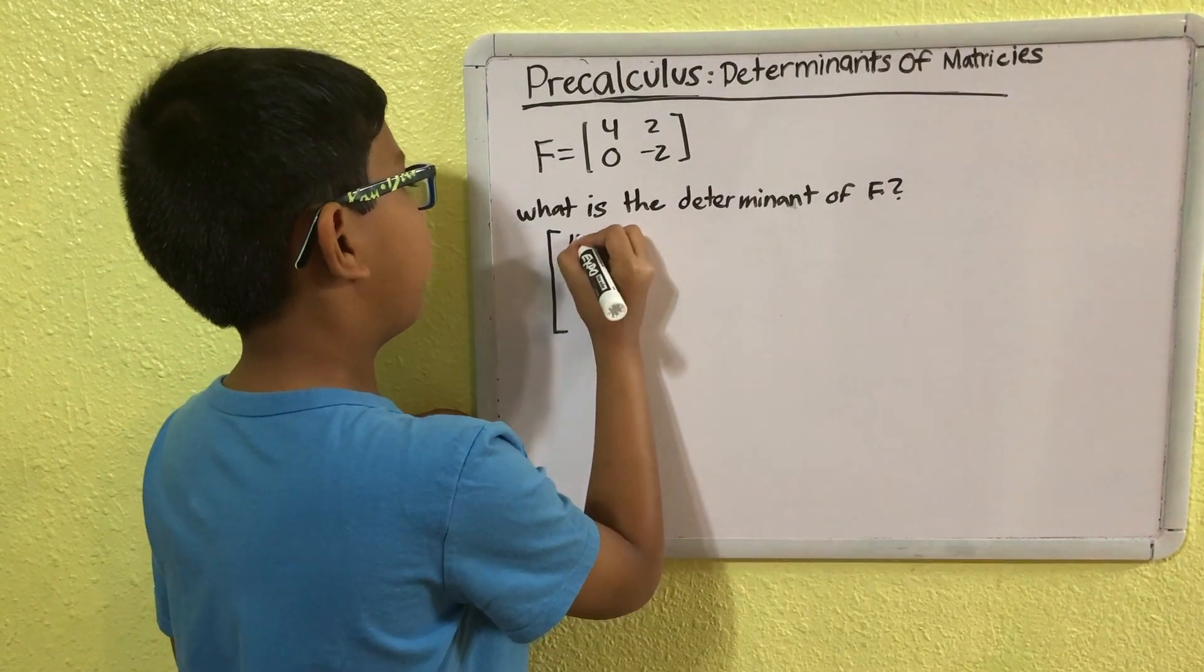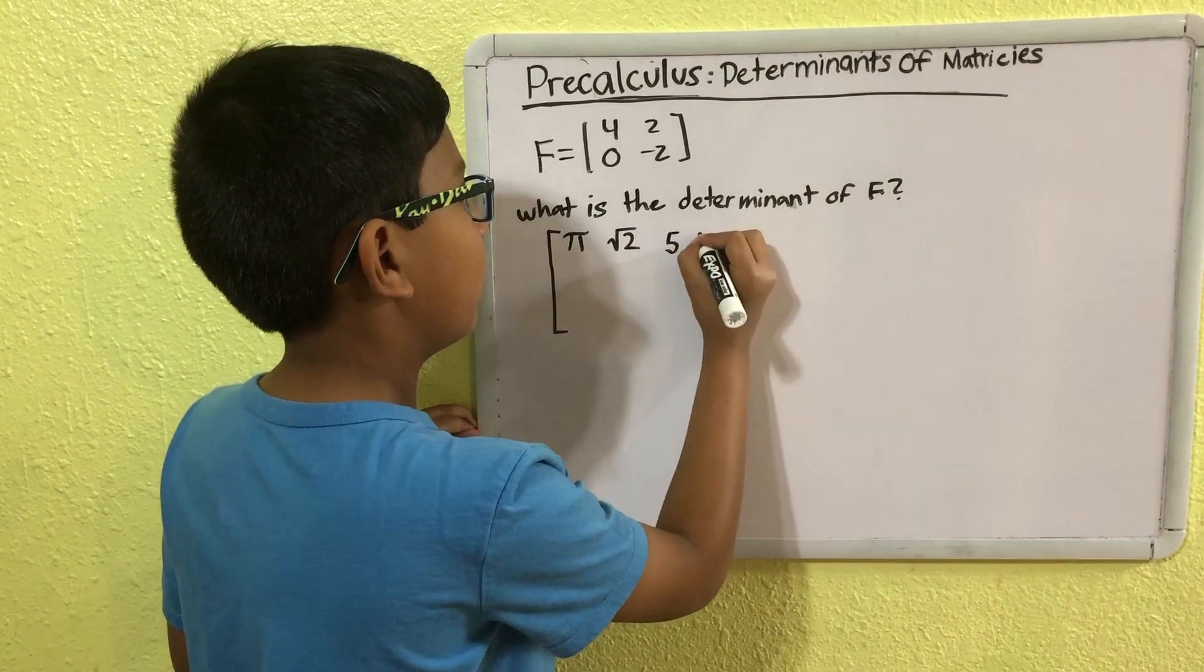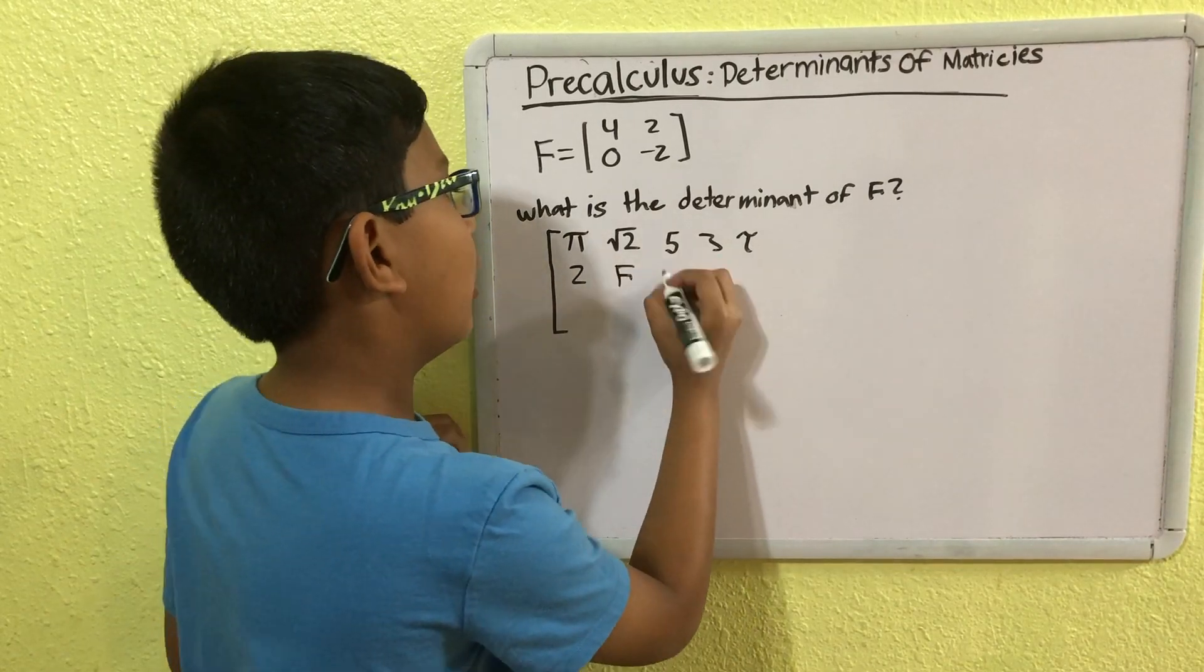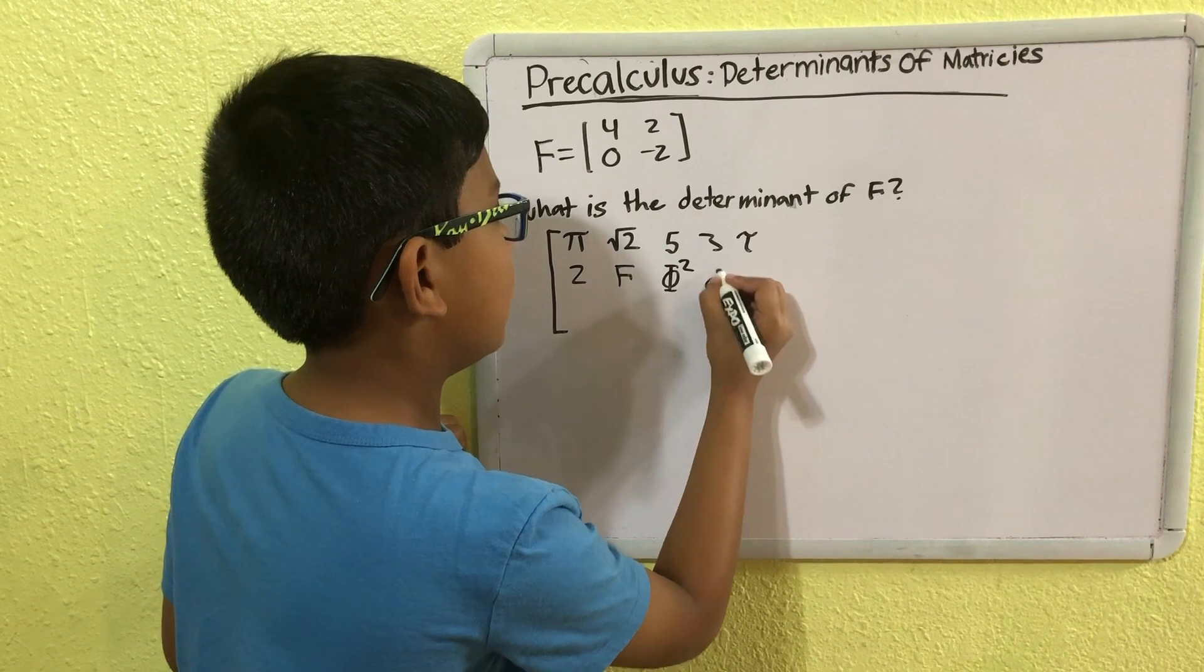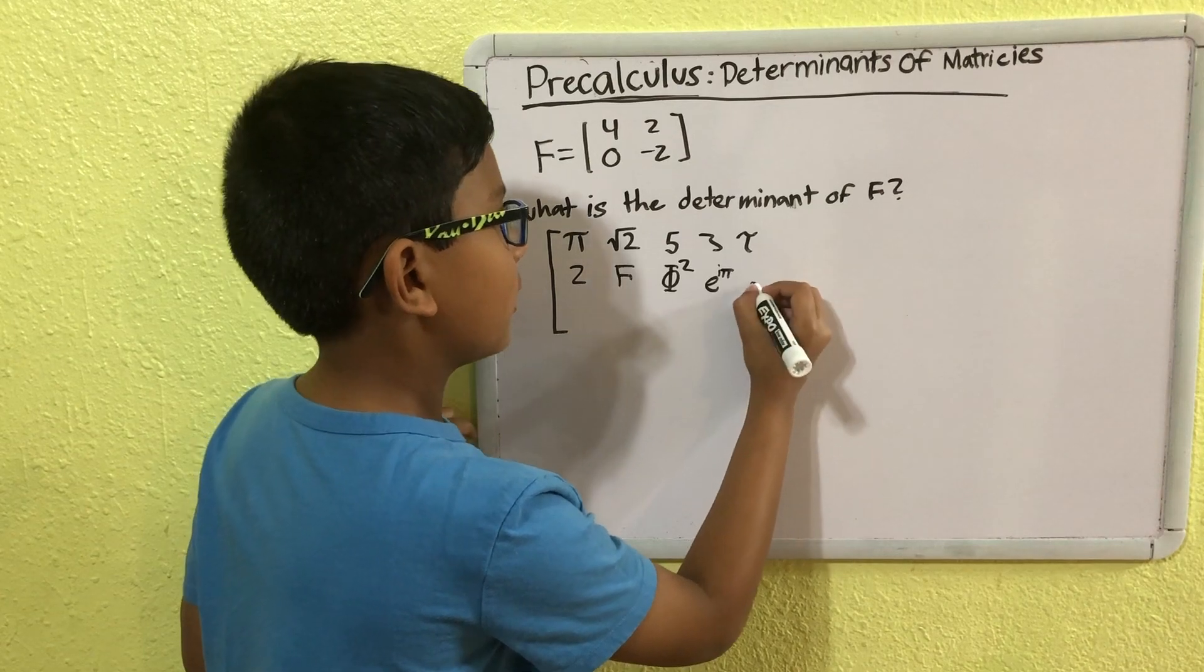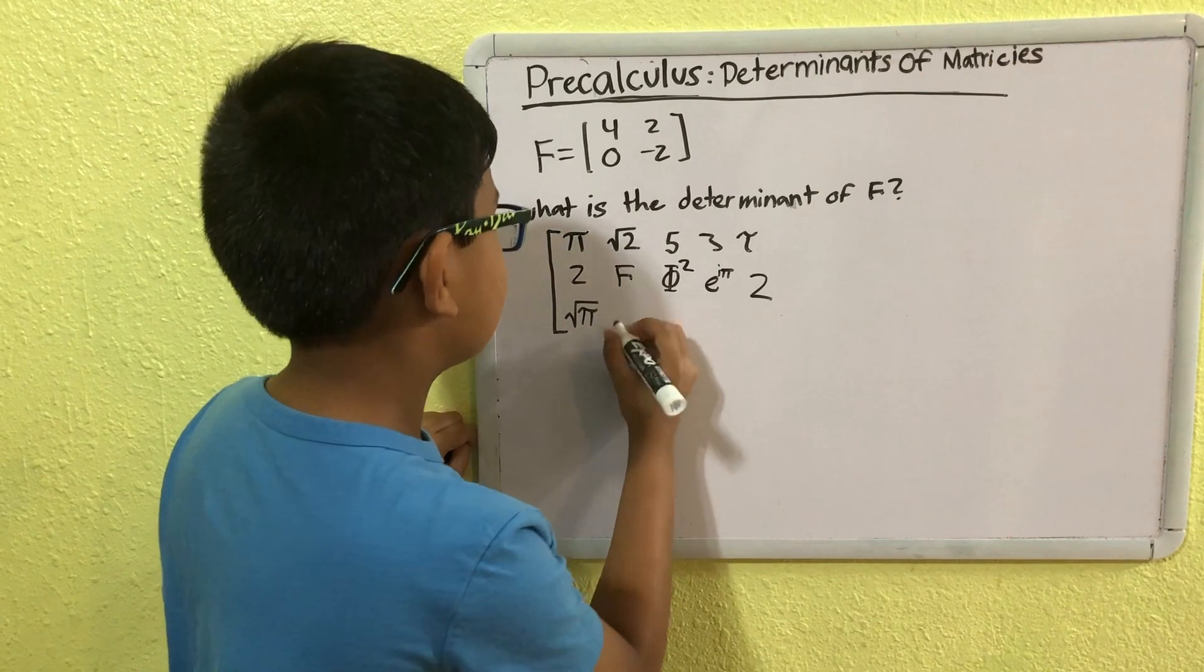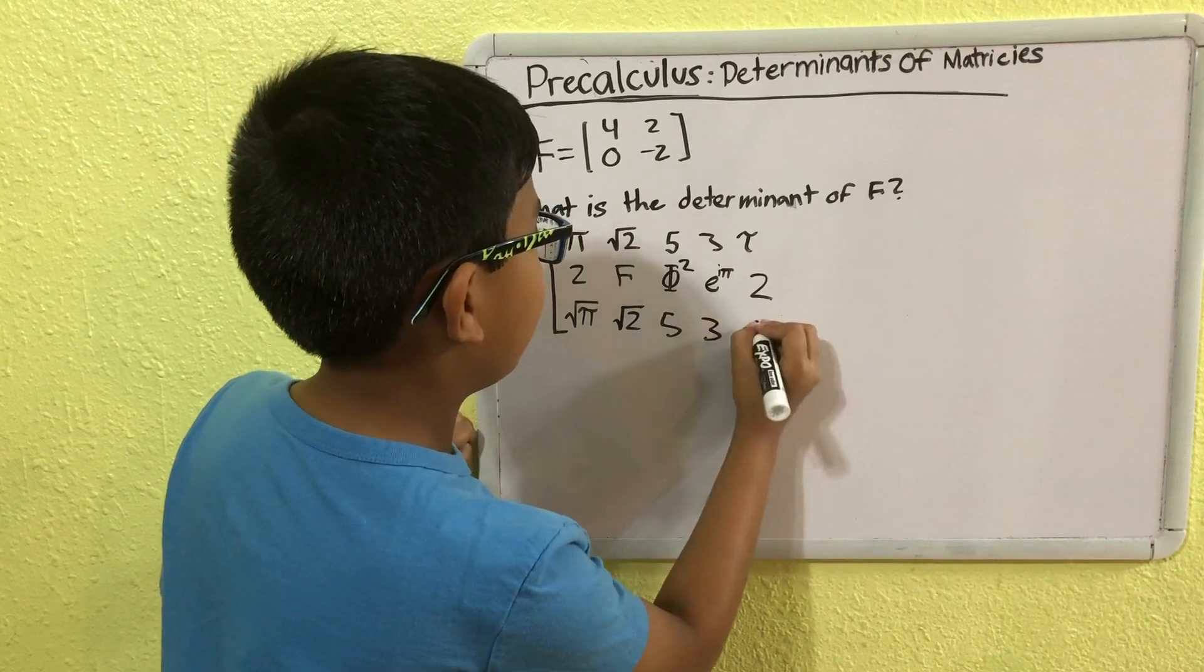It's just to show you. So, I have pi, square root 2, 5, 3, tau, 2, phi squared, e to the i pi, 2, square root 5, 3, 7.